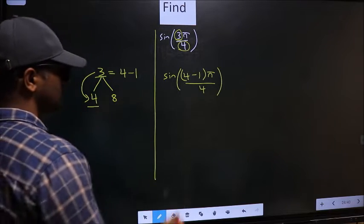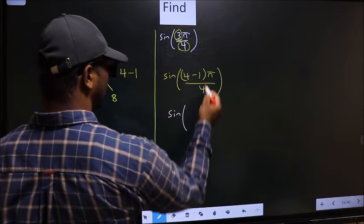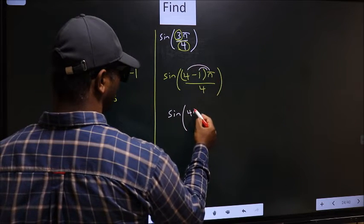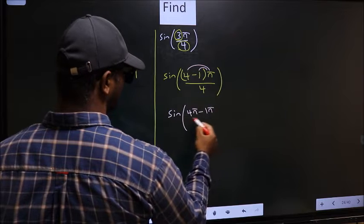Next, sin. Now you should open up the brackets. You get 4π - 1π by 4.